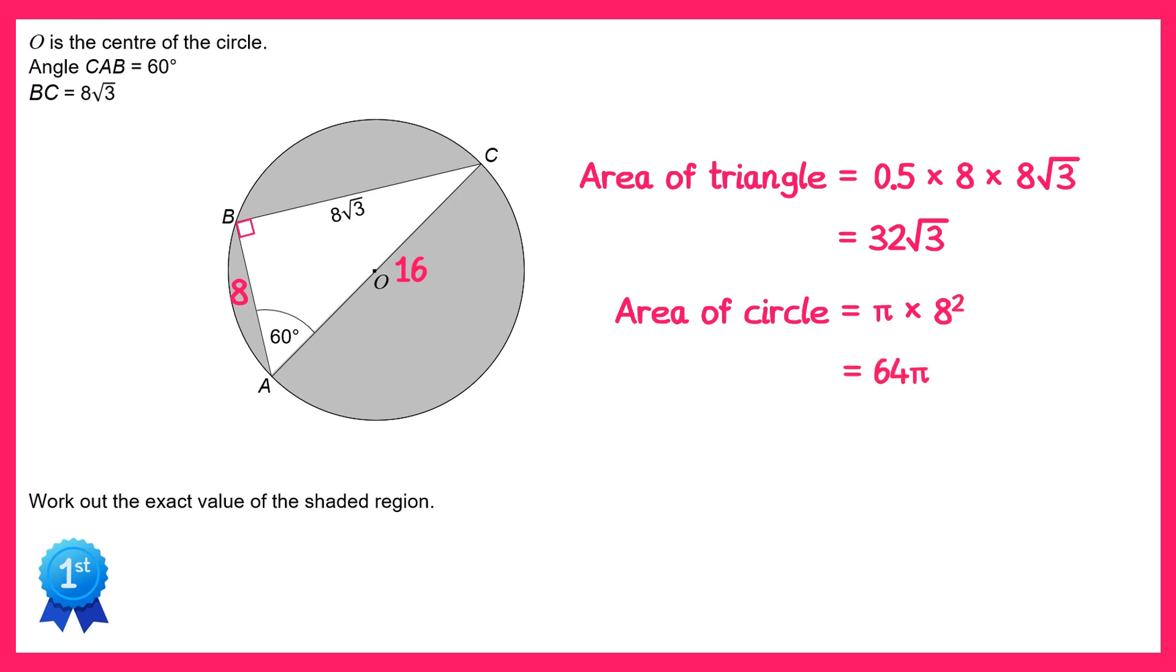So the area of the shaded region is just the area of the circle subtract the triangle, so 64π take away 32√3. And that's your answer to the question.